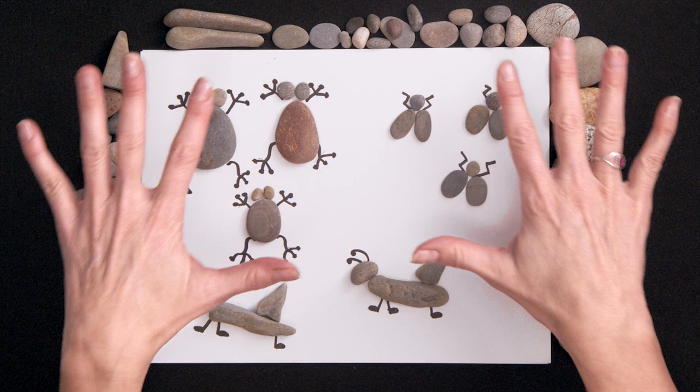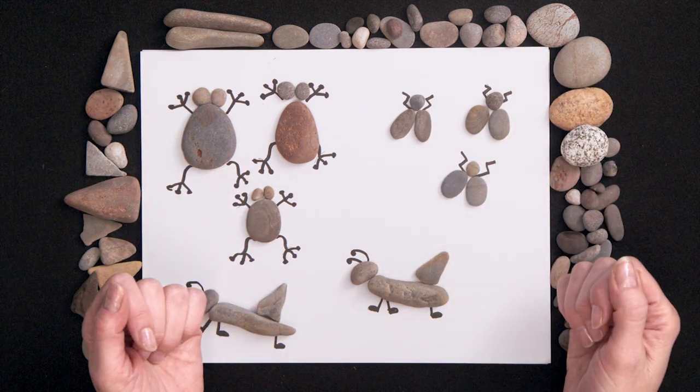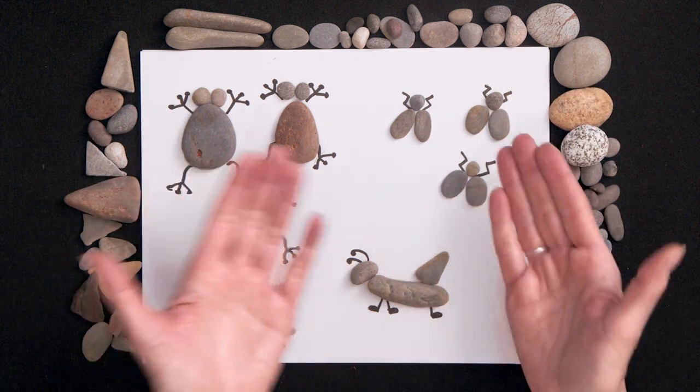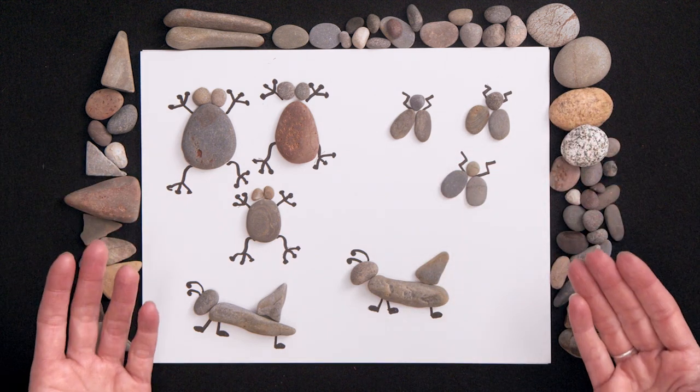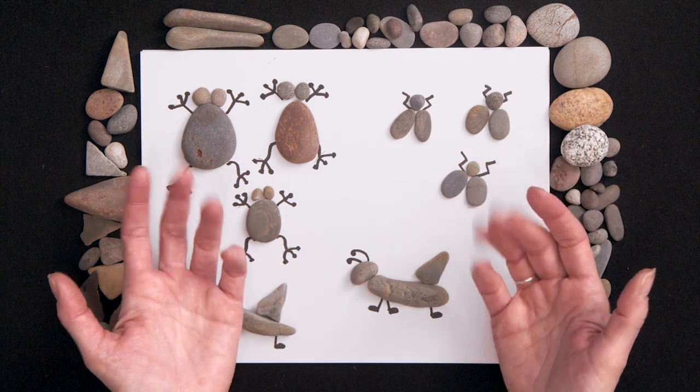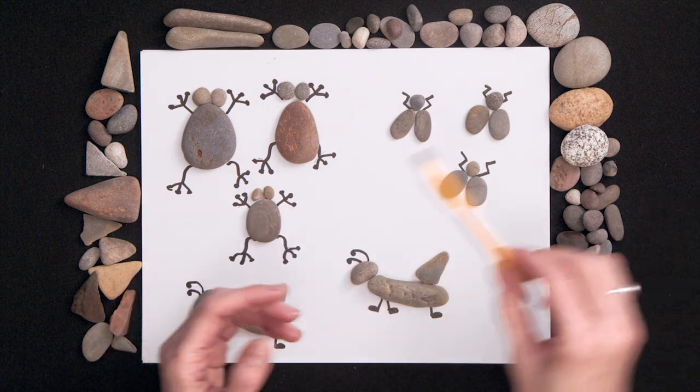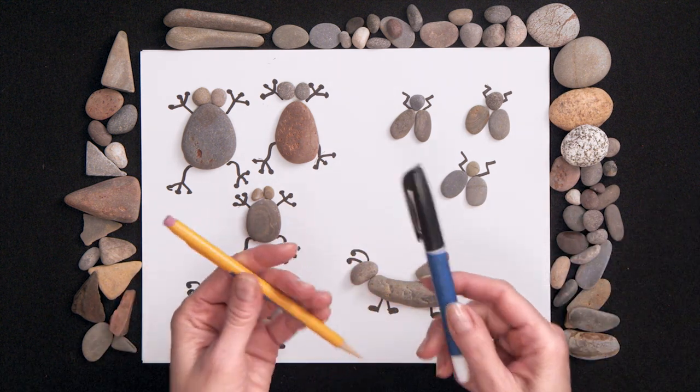Today, we're going to make bugs and frogs with rocks and pebbles, like the story of the plagues in Egypt. If you want to make some bugs and frogs, then you'll need some small rocks, paper, and a pencil, and maybe even a marker.